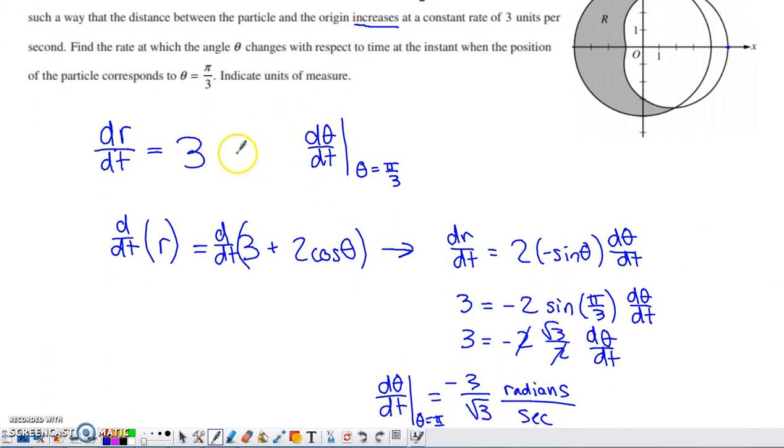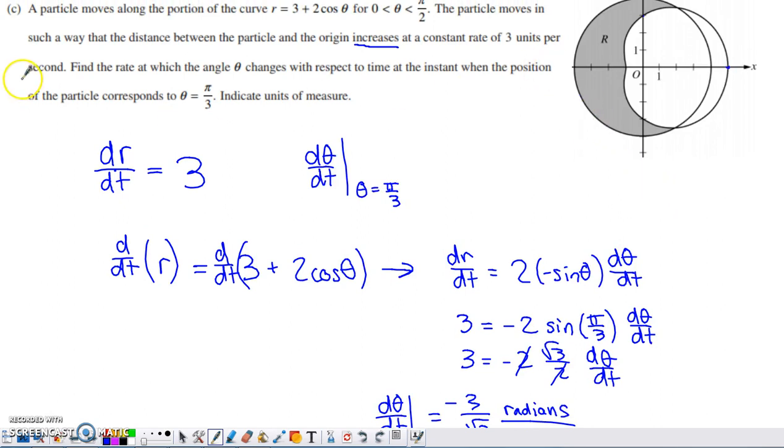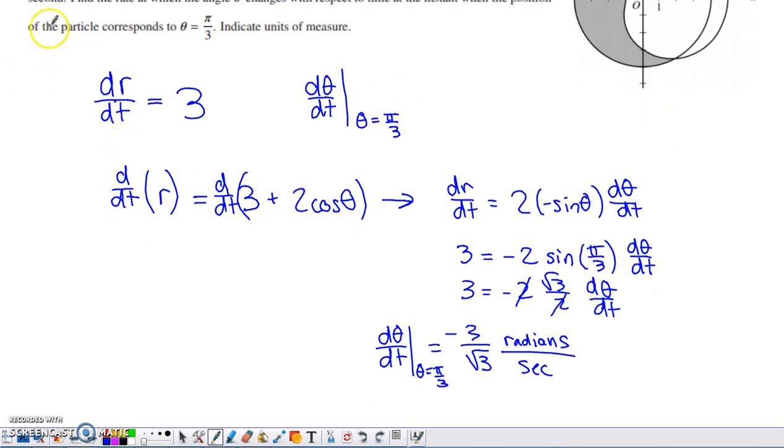I now can plug 3 in place of dr/dt. Plug π/3 in place of theta. I'm looking to find dθ/dt. I evaluated sine of π/3, got square root of 3 over 2 for that. These 2's cancel. So I have 3 equals negative root 3 dθ/dt. If I solve that for dθ/dt, I divide by negative root 3 and get this value. Because that's the rate of change of an angle, the units in the numerator are radians, and it's the rate of change over time measured in seconds. So our units are radians per second.